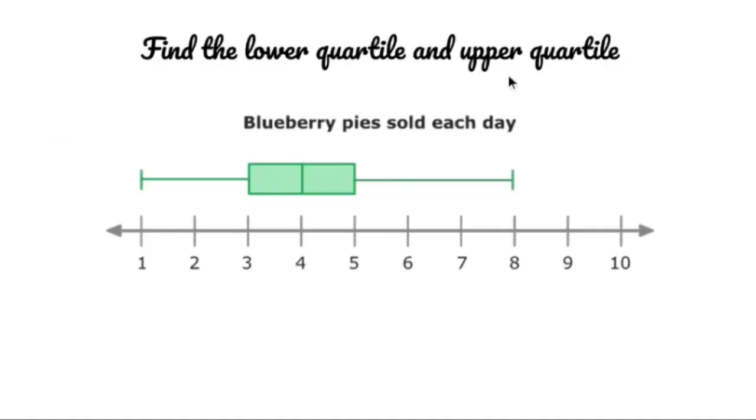Find the lower quartile and the upper quartile. What we have here is a box and whisker plot.